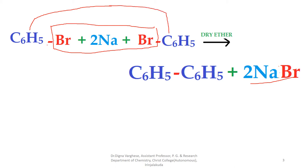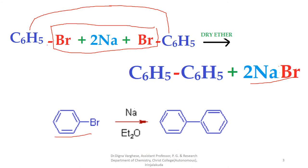That is, bromobenzene reacts with sodium metal in dry ether, it will form biphenyl C6H5-C6H5. So Fittig reaction is that reaction it will produce aryl compounds, biaryl compounds. Here you can see bromobenzene reacts with sodium in dry ether medium and forming diphenyl. This reaction is called Fittig reaction.